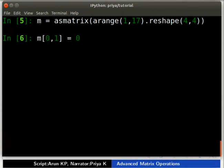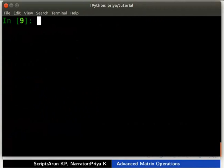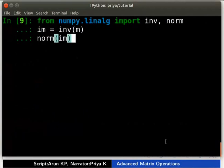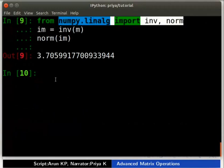Now, type M inside square brackets 0,1 is equal to 0. M inside square brackets 1,3 is equal to 0. Then type M. We changed the value of the element at row 0 column 1 and row 1 column 3 to 0. In order to find out the Frobenius norm of the inverse of a matrix M, type as shown. Norm function is available in NumPy dot LIN ALG module.